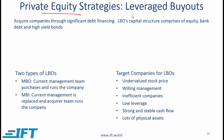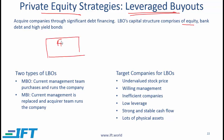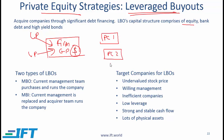One of the most important private equity strategies is leveraged buyouts, where the private equity fund acquires companies through significant debt financing. The LBO's capital structure comprises equity, bank debt, and high yield bonds. The firm or GP puts some money of its own, raises money from LPs, and this money is then used to invest in target companies or portfolio companies.